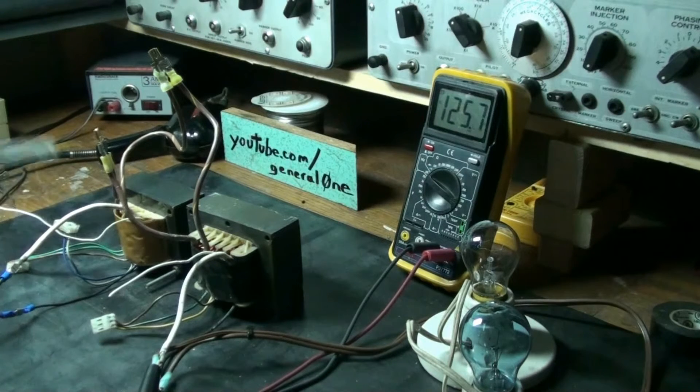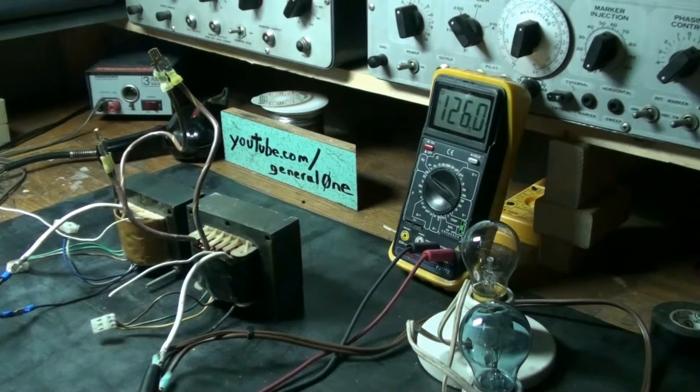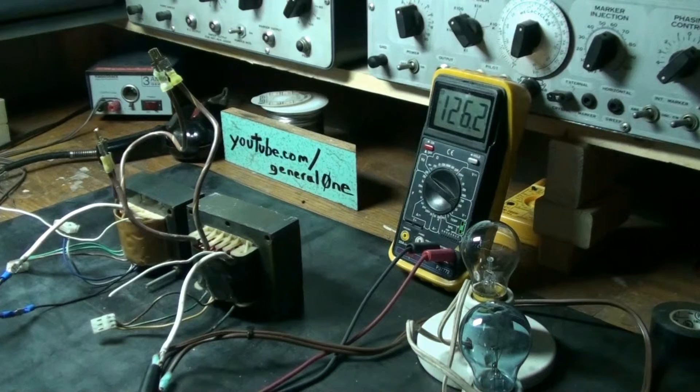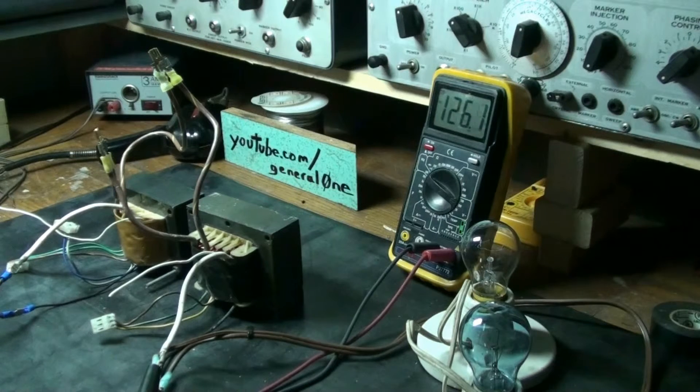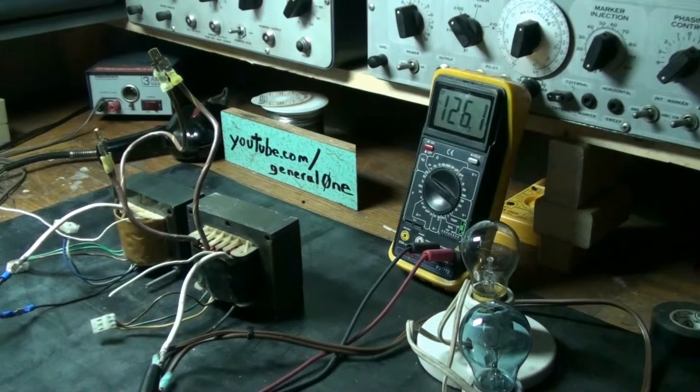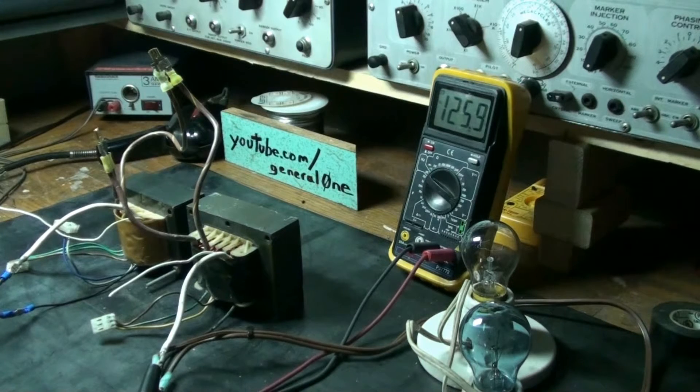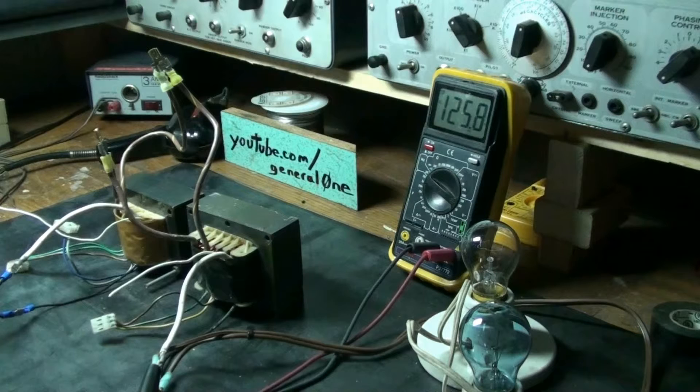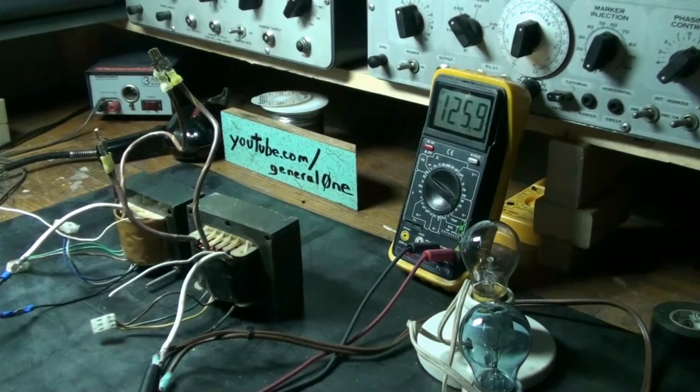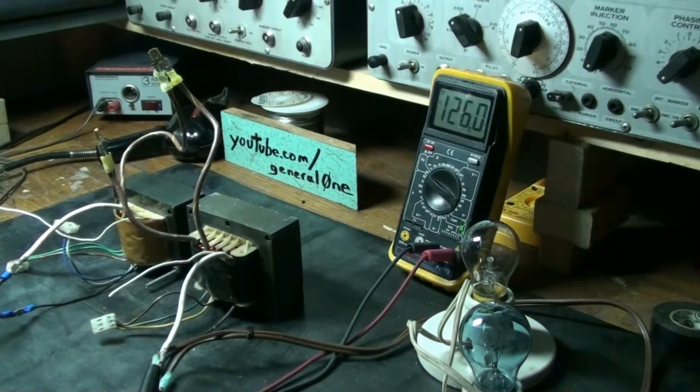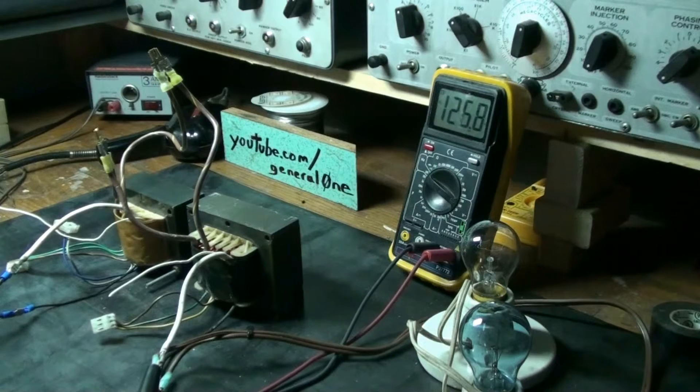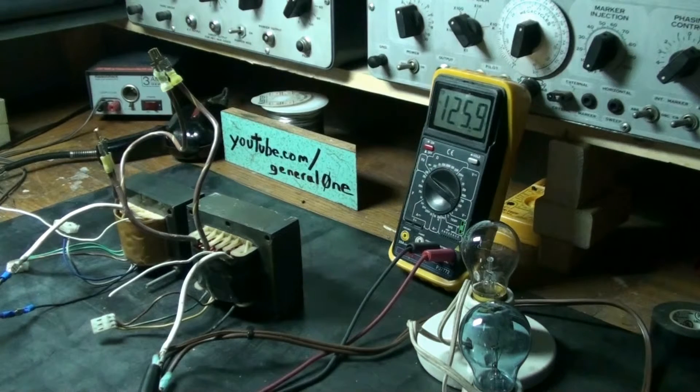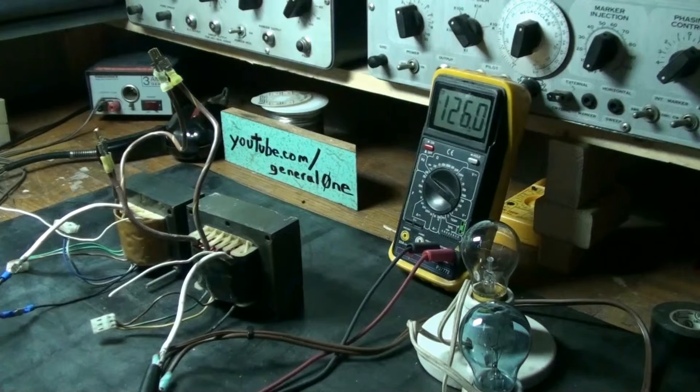As you can see on the meter, we're reading 126 volts approximately. Not sure how accurate this is at the moment because the battery in my meter is in need of replacement, so we might be a little bit off, but we're reading a little bit above line voltage.